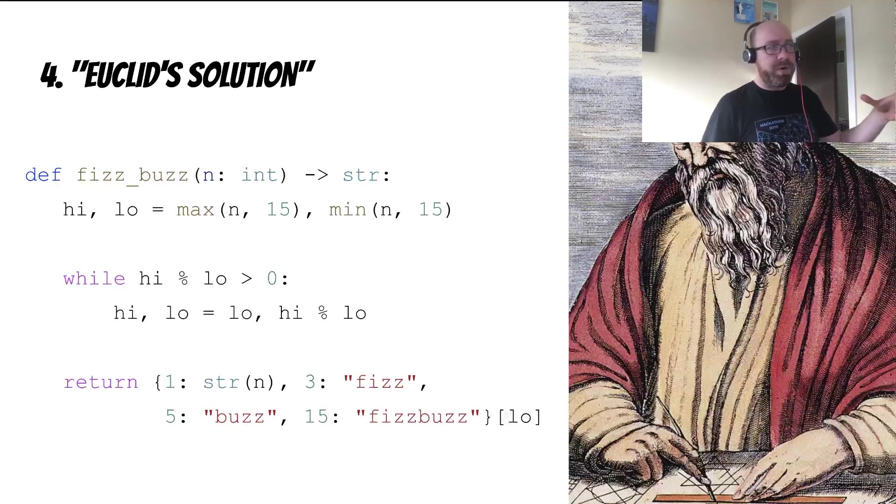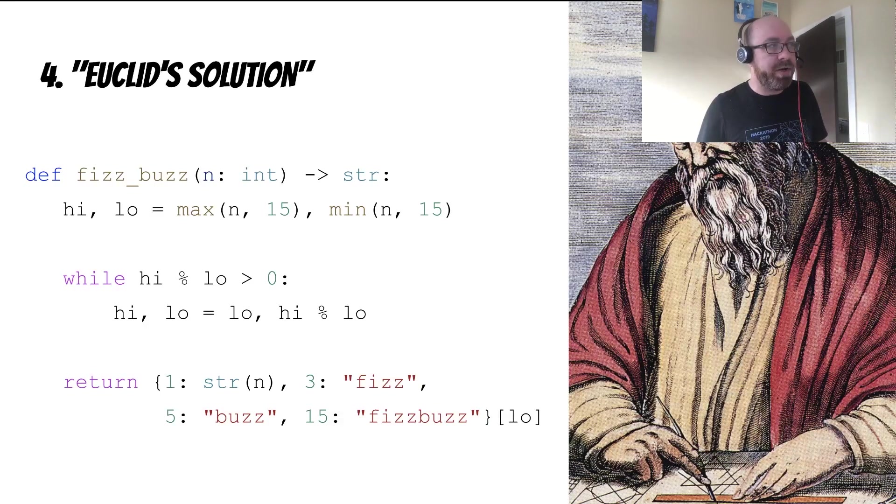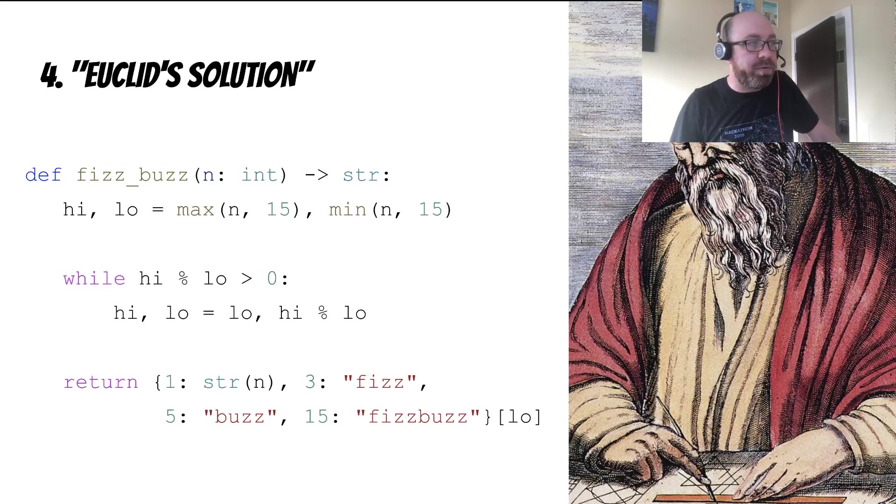Maybe you prefer number theory. If you prefer number theory, there's always Euclid's solution. This is one of my favorites, actually. I'll let you stare at it for a minute to see how elegant it is. It's probably not obvious how it works. I know it's not obvious to me looking at it how it works, but if you go through it, it actually does work. And if you sort of unpack it, it's quite a beautiful solution.